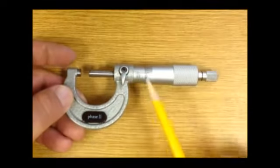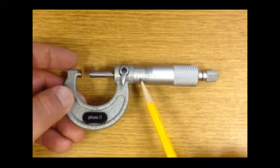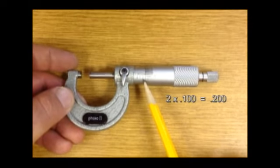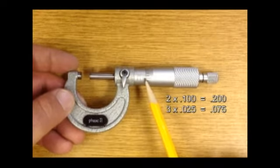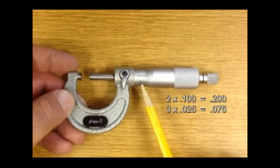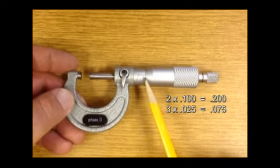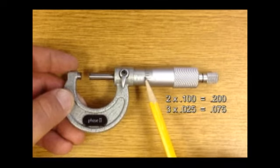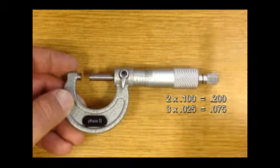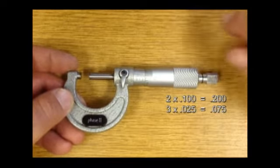We're at one. Take the pencil out since we locked it. So there's 100,000, 200,000. We've got one, two, three marks. So 100, 200, and 25, 50, 75. So we're at 275.